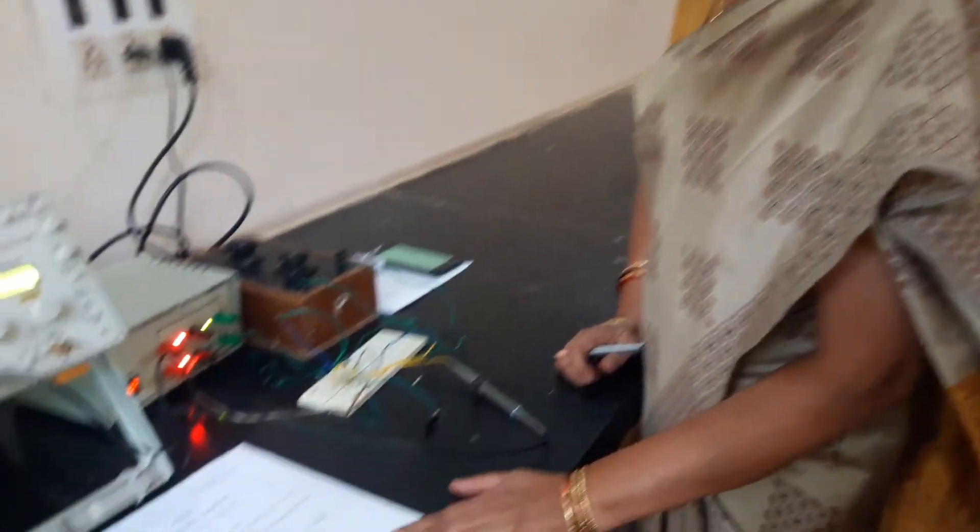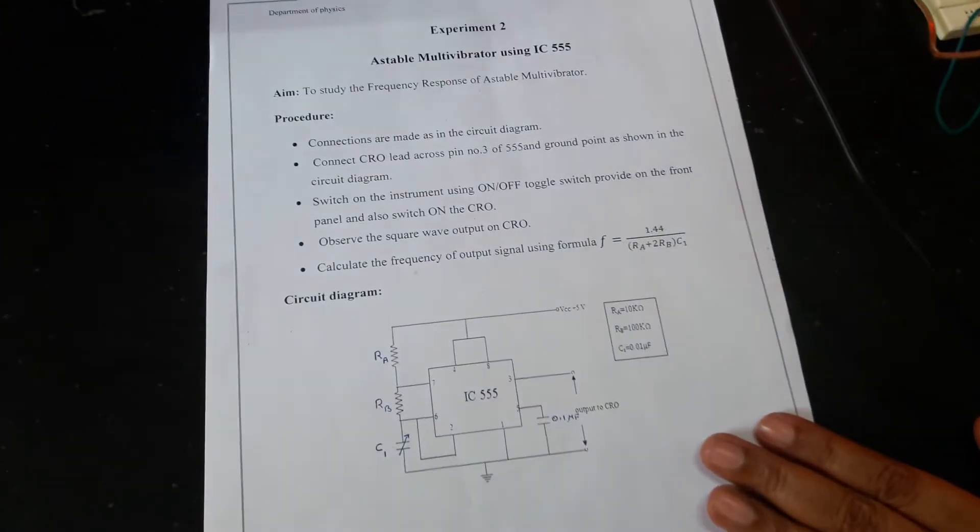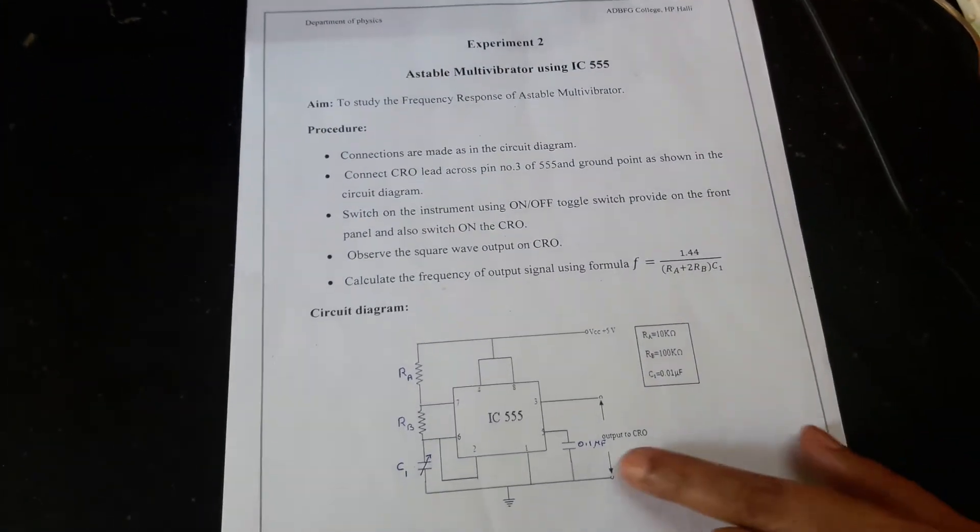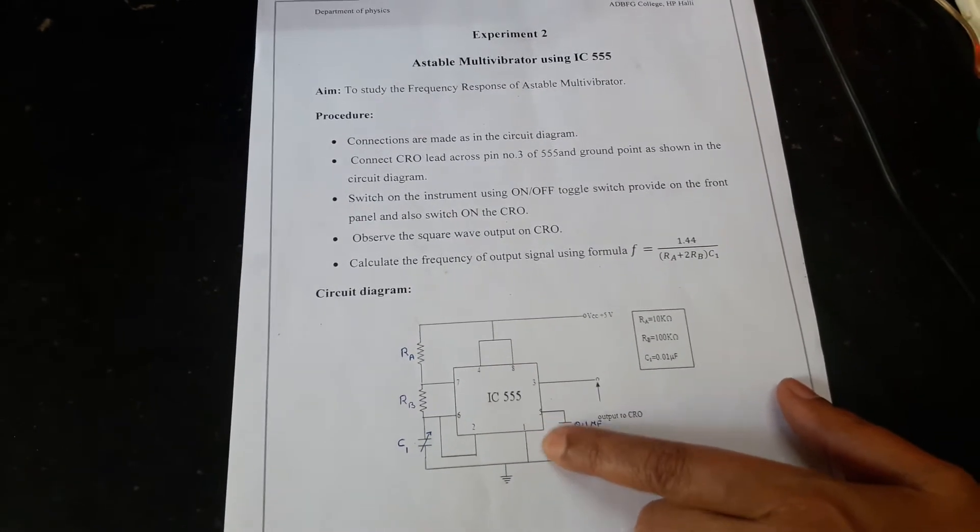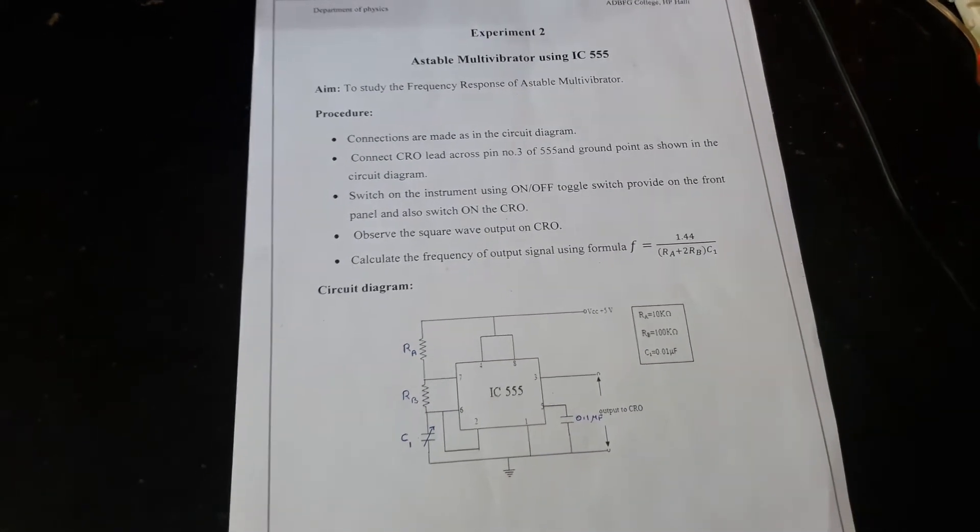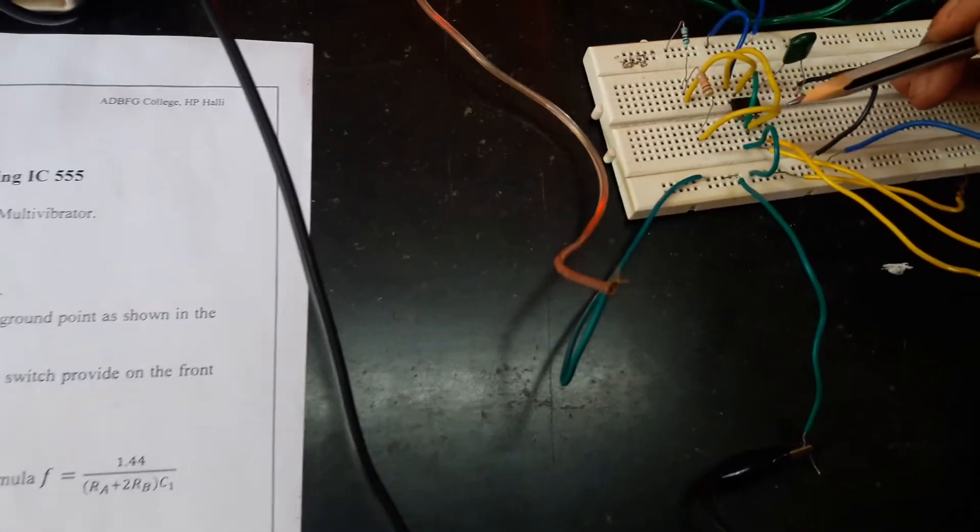The circuit diagram is as in the figure. So, I will start my connections from pin 1. Pin 1 should be grounded. I will show you, pin 1 is grounded here and from pin 2, it goes to pin number 6.